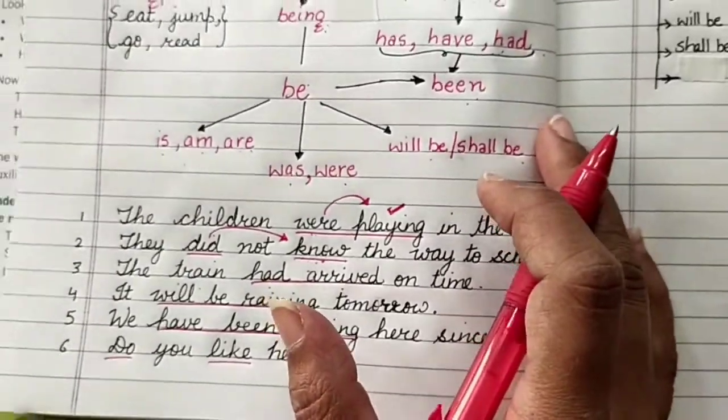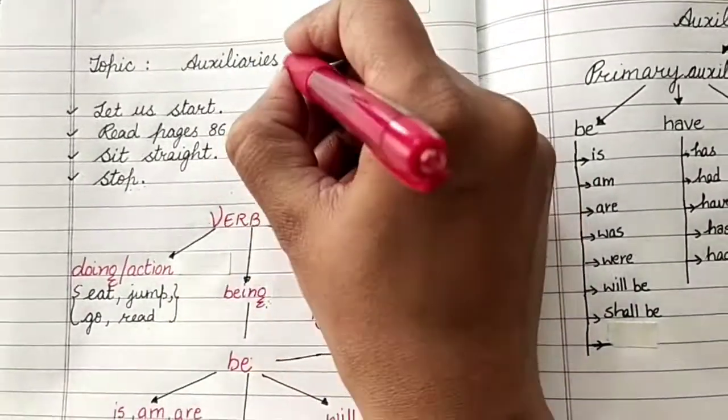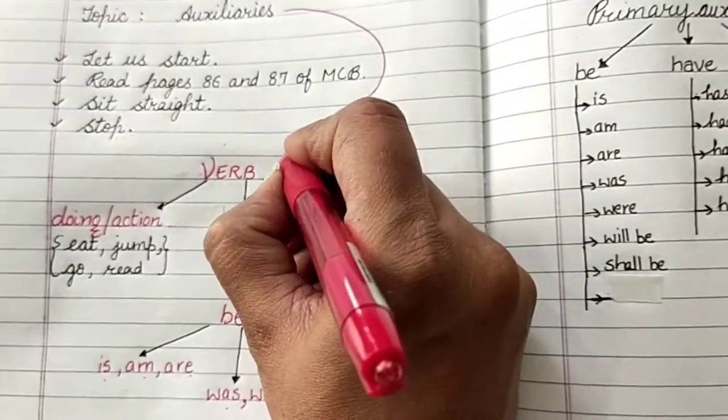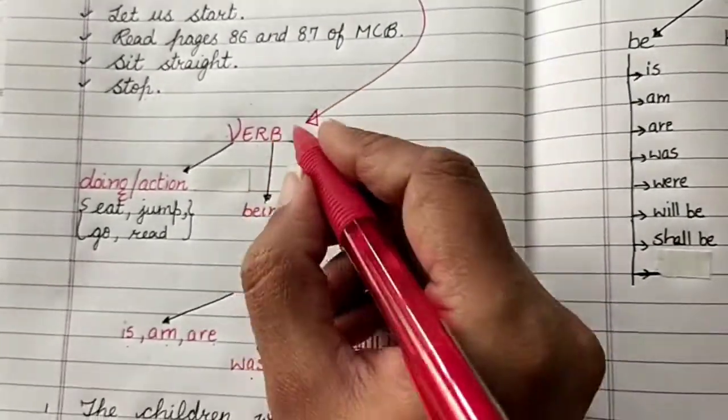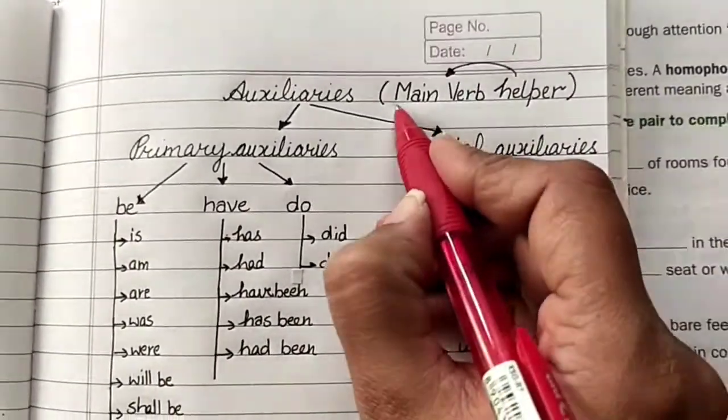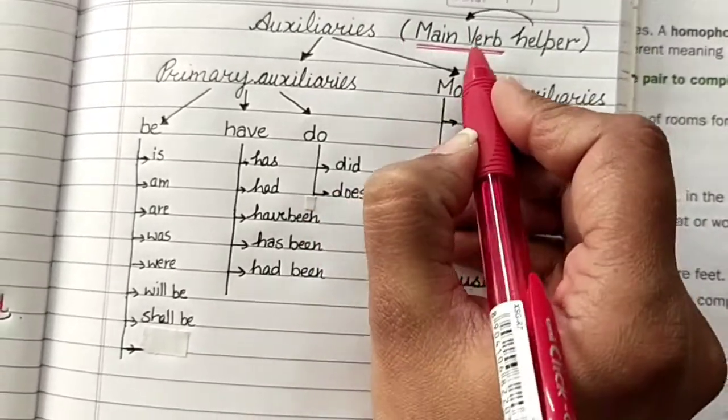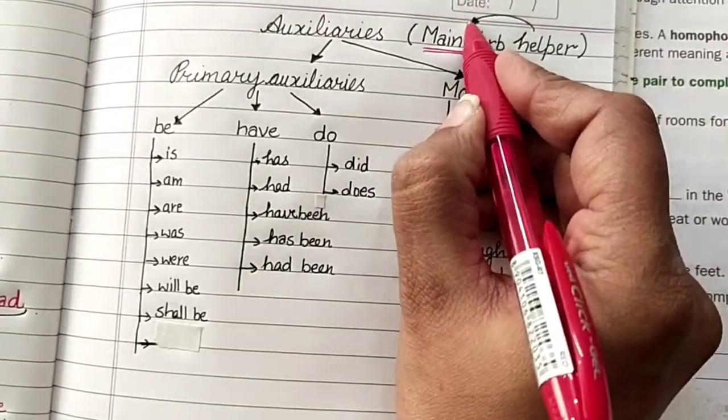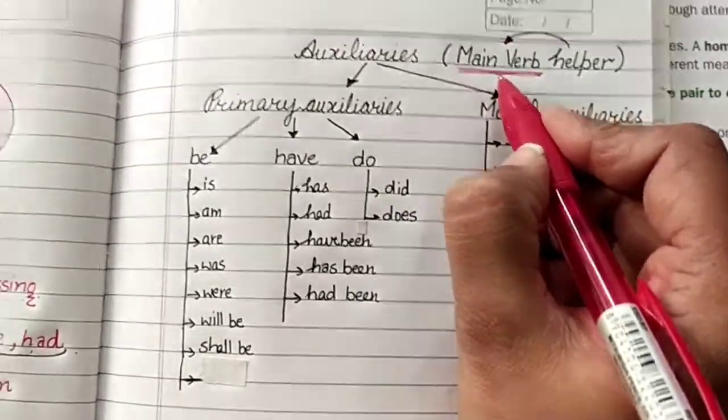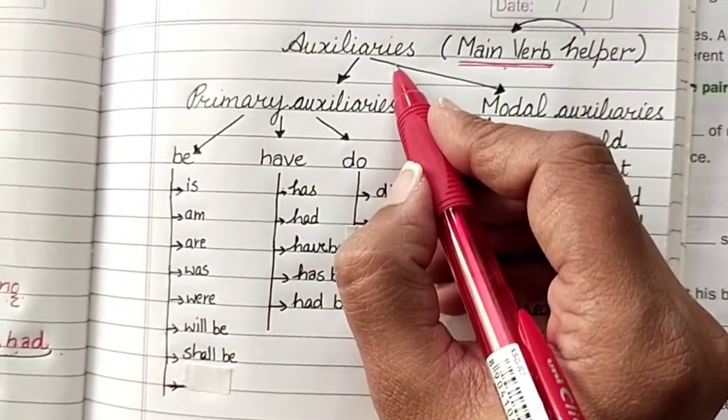Auxiliaries are those verbs. Auxiliaries are verbs only. They are verbs only but they are those verbs which are helping the main verbs in a sentence. The verbs that work as a helper or they help the main verb in any sentence are called auxiliaries.